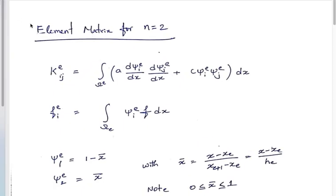Moving to today's content: one of the first things we have to do before solving an FEM problem is derive the element matrices for an arbitrary element domain. We will start with the case where small n, the number of nodes per element, is two. Element matrices must be derived separately for different orders of interpolation.